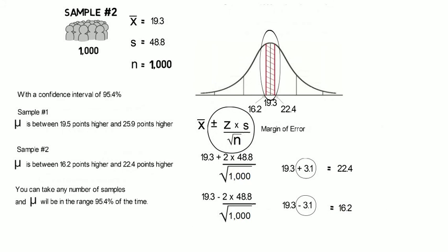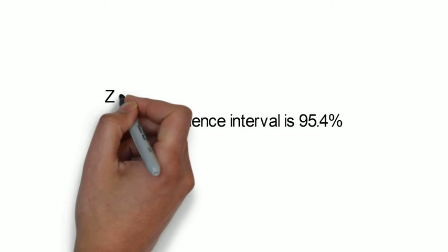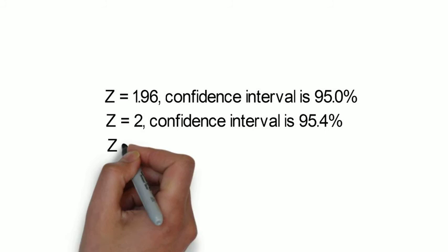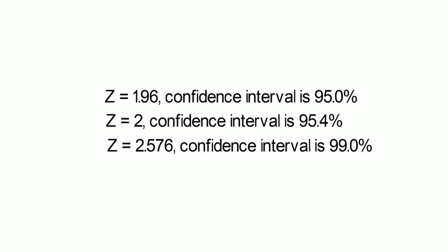And the other thing I want to point out is that we're using a z of 2. And the confidence interval is 95.4%. If we wanted 95.0%, it's a different value for z. Z would be 1.96. If we wanted 99.0%, we could use a multiplier for z of 2.576. In fact, we could find a lot of values of z with different confidence intervals, which we'll do in a different video.